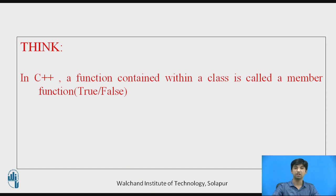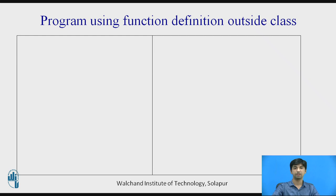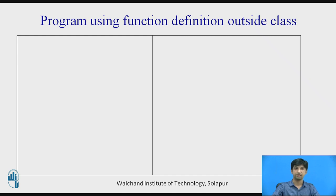Now we'll check a program using function definition outside the class. You define the function outside the class using the scope resolution operator — the double colon symbol. This is a program of getting input for a student: his name, his roll number, and his percentage.